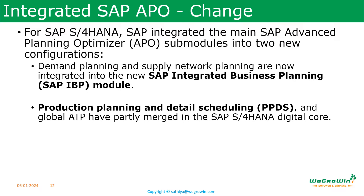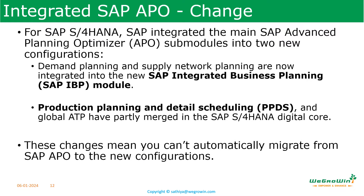For SAP S4HANA, SAP integrated the main SAP Advanced Planning Optimizer (APO) submodules into two configurations. Demand Planning and Supply Network Planning are now integrated into the new SAP Integrated Business Planning (SAP IBP) module. Production Planning and Detail Scheduling and Global ATP have partly merged in the SAP S4HANA digital core. These changes mean you cannot automatically migrate from SAP APO to the new configurations.